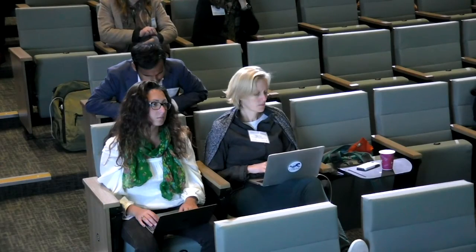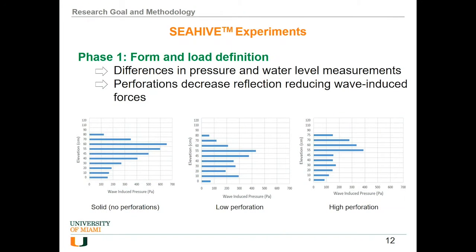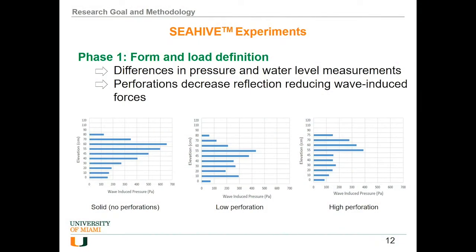We saw some things we expected: differences in the pressure applied on the elements, and differences in the water level recorded inside and after the elements. This can be attributed to differences in the flow as well as differences in the perforations. But if you compare just the square elements, you can see that perforations do reduce the pressure — basically by reducing the reflection from the wall. Reflection is a big factor because it typically causes scour and other effects.